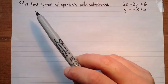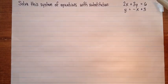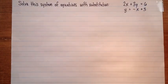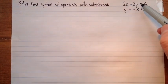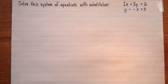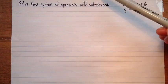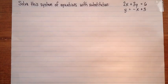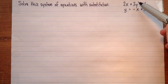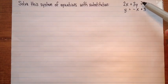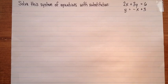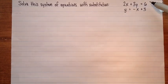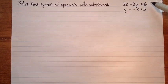So in this question, we're asked to solve this system of equations with substitution. We've got two equations here: 2x plus 3y equals 6, and y equals negative x plus 3. Remember that solving a system of equations means finding values for the variables — numbers for x and y — that make both equations true.